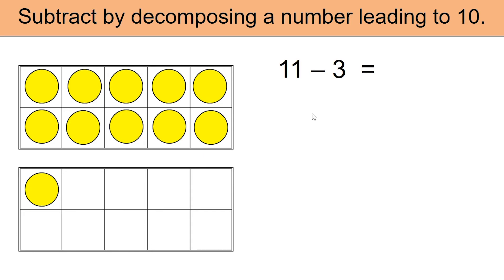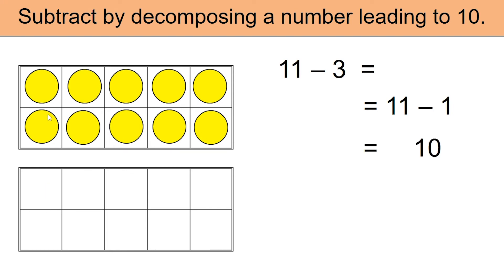Once you have 11 counters set up, let's revisit — we need to remove 3. As you can see in the second frame we already have one. Let's go ahead and remove this one to begin with. 11 minus 1 gives you 10 — as you can see we have 10 left. The question was asking us to remove 3; we only removed 1, which means we need to remove 2 more. Let's remove 2 more from the frame.